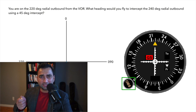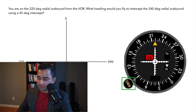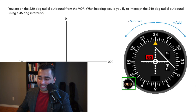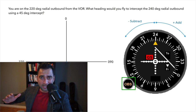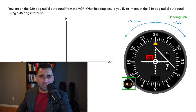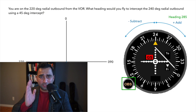Now twist the OBS knob until the desired radial is on top, since we're going outbound — so twist to 240 degrees on top. Here's a rule of thumb: if the needle swings to the left, subtract; if it swings to the right, add. The needle has swung to the right, so add 45 degrees to the desired radial: 240 plus 45 gives us an intercept heading of 285 degrees. In real life, fly that heading of 285 degrees until the needle centers, then turn to match your heading to the desired radial of 240 degrees.